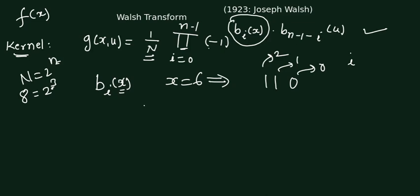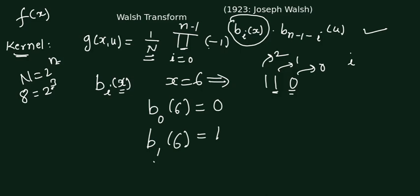If we want to write b0(6), that is the ith bit in the binary representation: b0(6) equals 0, b1(6) equals 1, and b2(6) equals 1. In this way we can calculate the ith bit in the binary representation of x. Once we know this, the term minus 1 raised to this part can be easily calculated, and we can write out the full kernel representation.